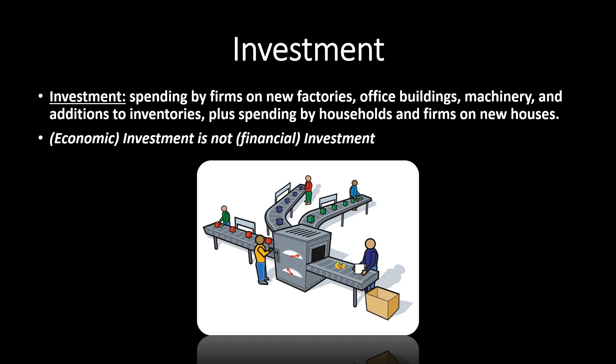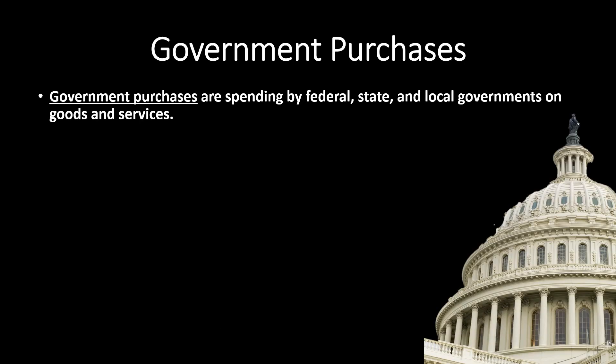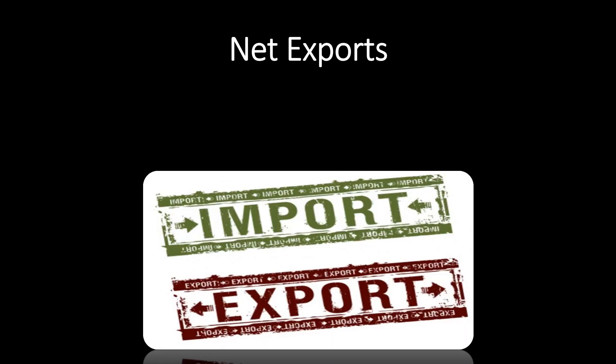The third component is government purchases — spending by federal, state, and local governments on goods and services. Notice it has to be spending on goods and services, so this is different from total government spending. Total government spending also includes paying interest on old debt and giving out subsidies to businesses or individuals.